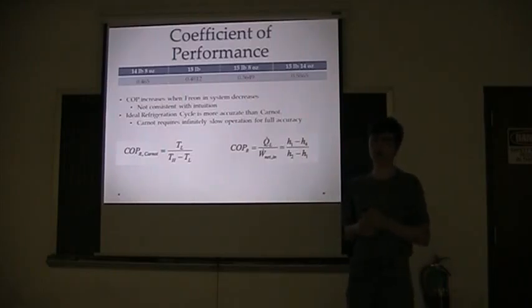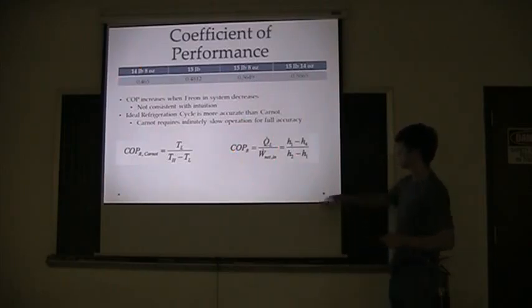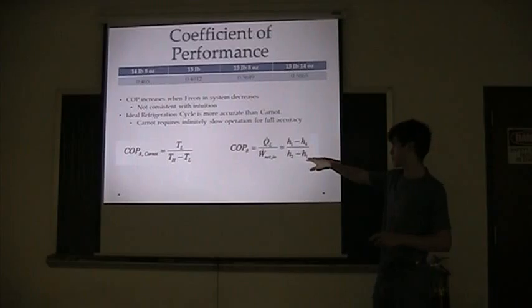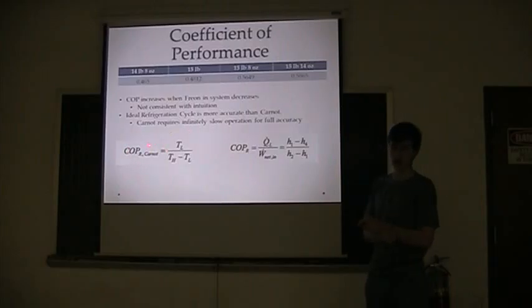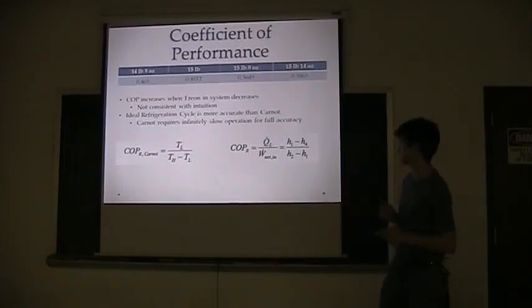But given the conditions of the lab that's how it came out. And again we used this formula to get coefficient of performance, which is based on enthalpies, which is more accurate than the Carnot cycle. The Carnot cycle essentially you need infinite time to get these temperatures. And also you need ideal conditions so you're not losing temperatures or pressures in the meantime. And ours was. So this is more accurate representation. And it also comes out as less efficient.